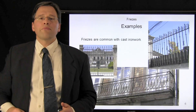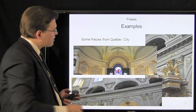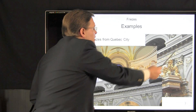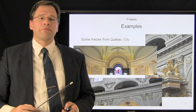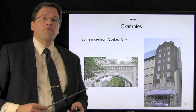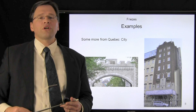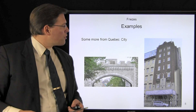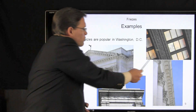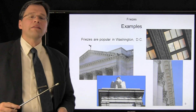Friezes are also very popular with cast iron work. Here are some very beautiful friezes from some of the churches in Quebec City — these are exceptionally ornate and very beautiful. Here a frieze decorates the top of one of the gates of Quebec City, and on the right-hand side we see a hotel that uses not a horizontal frieze, but a vertical frieze. Friezes are exceptionally popular in Washington D.C., decorating the Tomb of the Unknown Soldier, a war memorial, and the ceiling of the Lincoln Memorial.